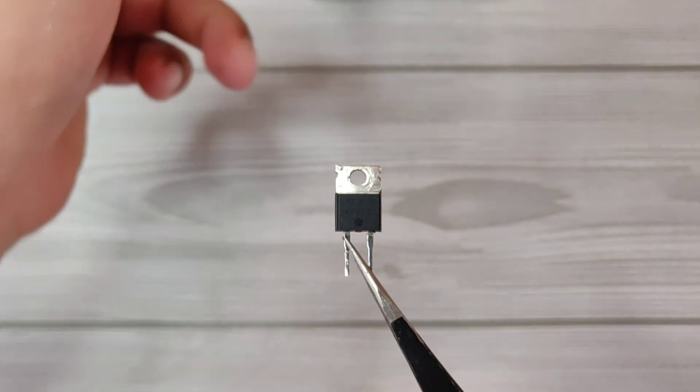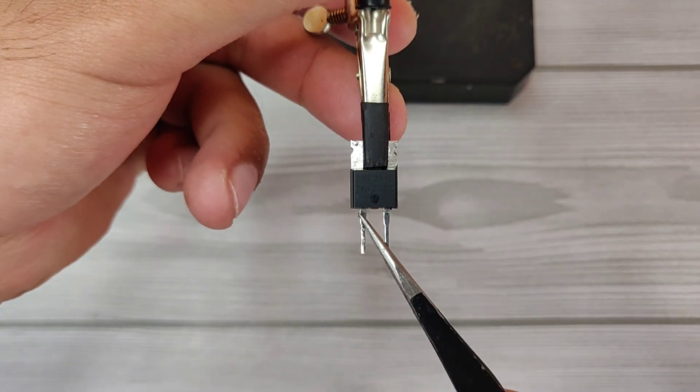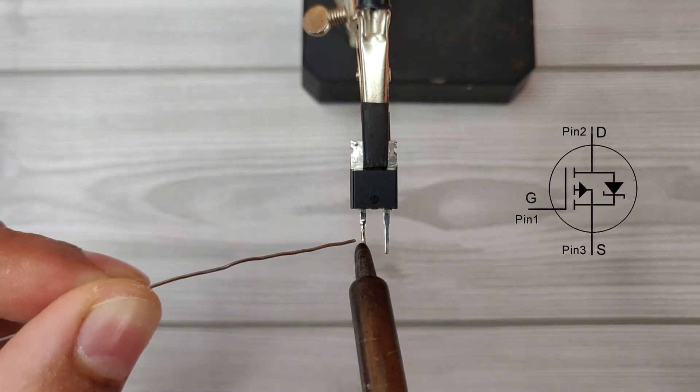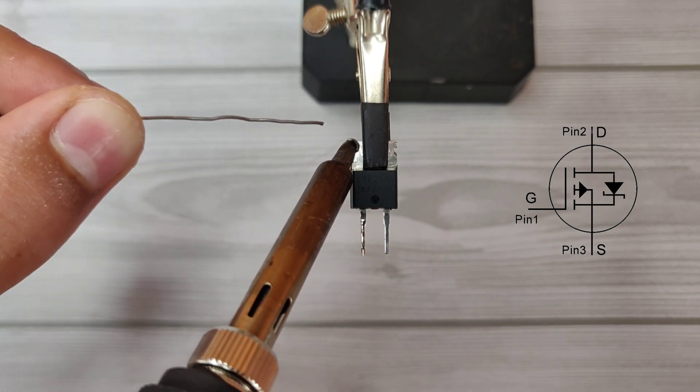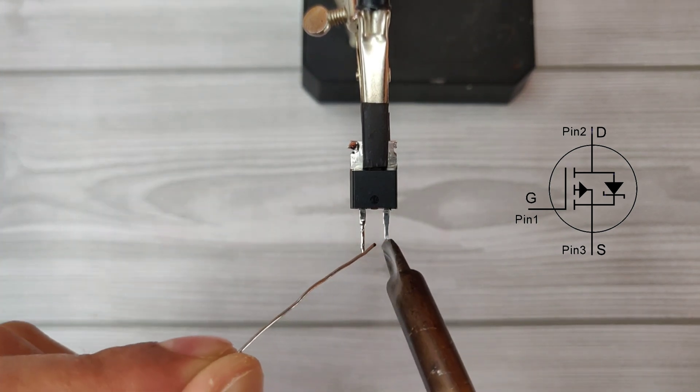IRFZ44N MOSFET. Pin 1 is gate, pin 2 is drain, and pin 3 is source.